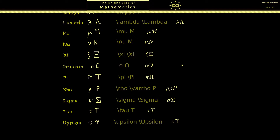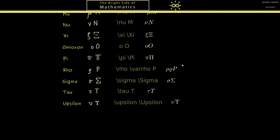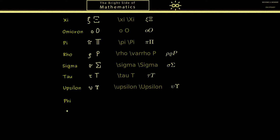Now the last four letters, which are all used frequently. Starting with phi: you often see the lowercase version and also the capital one. There is also another version of the lowercase one which looks similar to the capital one, so it's very important to distinguish the corresponding LaTeX commands to avoid confusion between lowercase and capital.